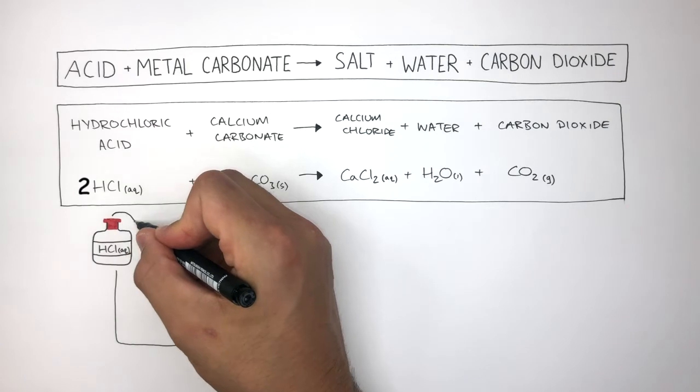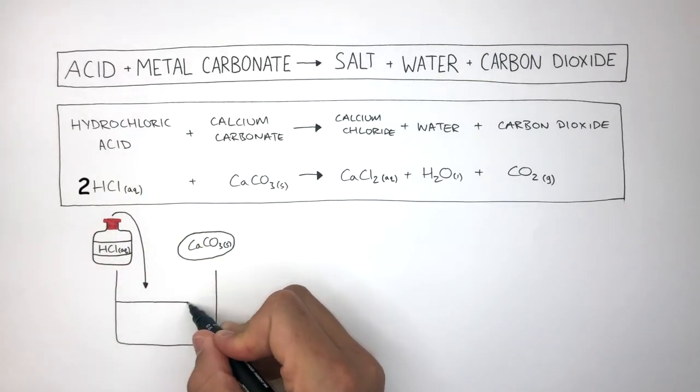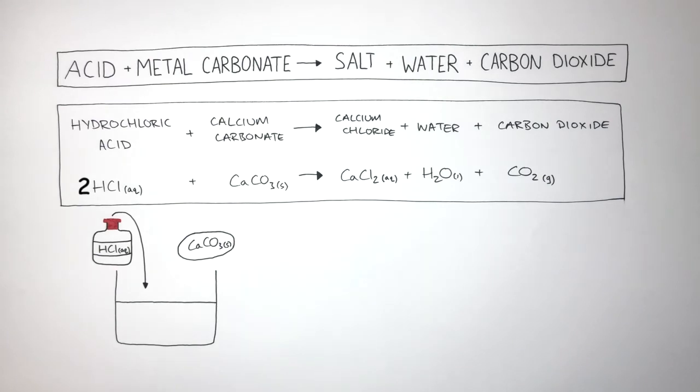So if we pour the hydrochloric acid into the beaker, what we have is a solution of hydrochloric acid where there are hydrogen ions and chloride ions which are free to move.